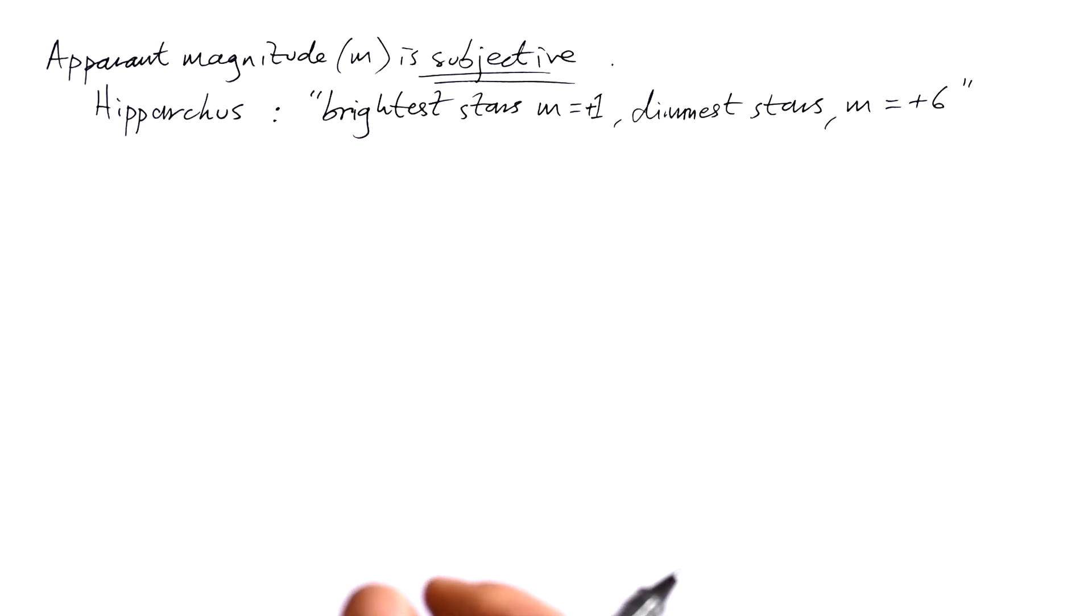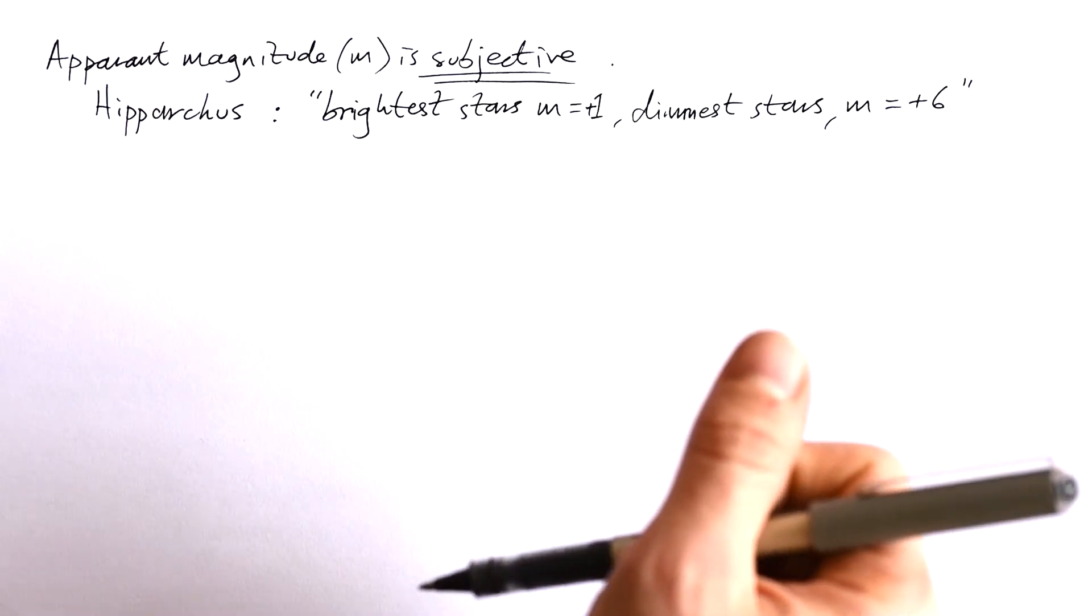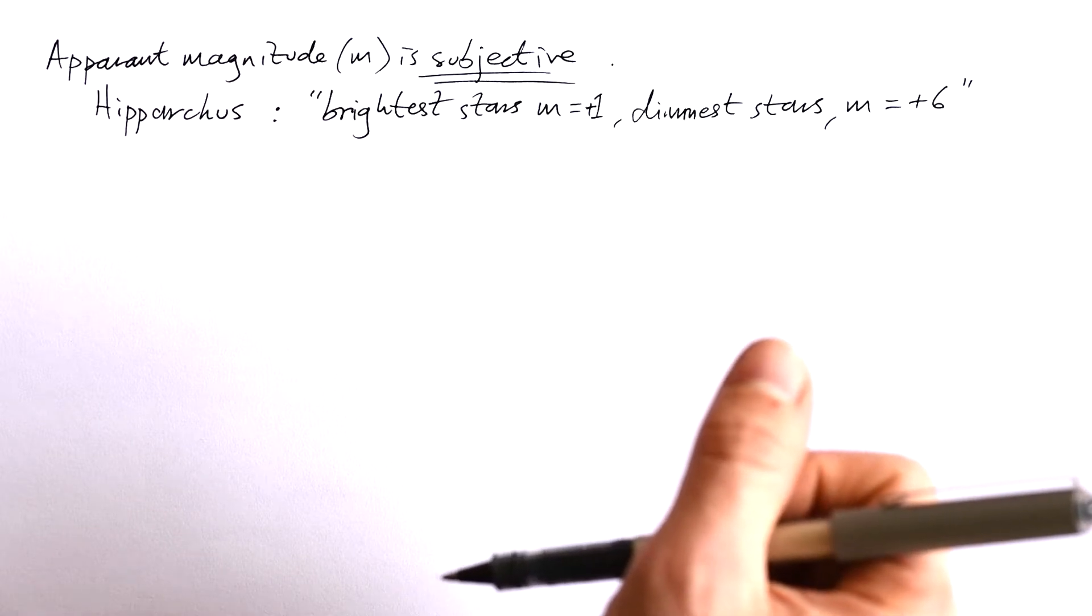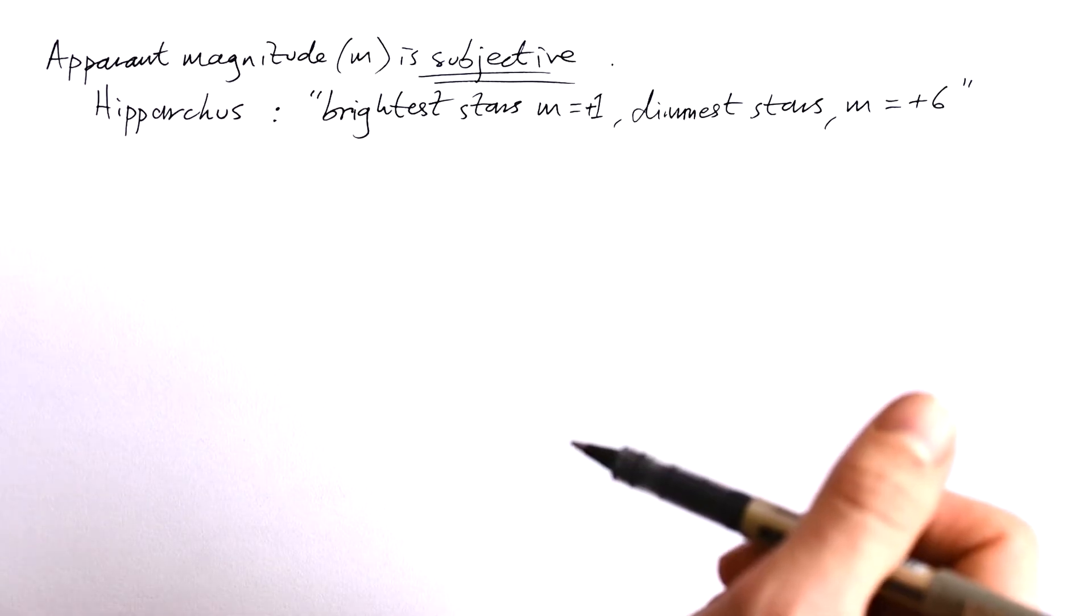You might be thinking, why do we still use this if it's so subjective? And you'd be absolutely right. One of the problems is that you might look at a star and think it's about magnitude three, while another person might say it's actually a lot dimmer at five. It's subjective.